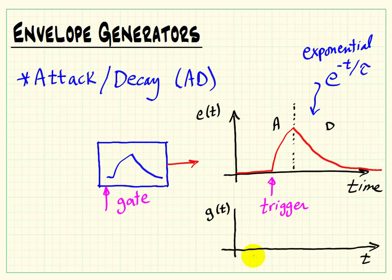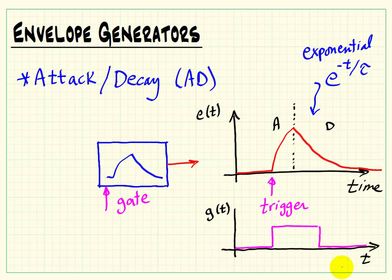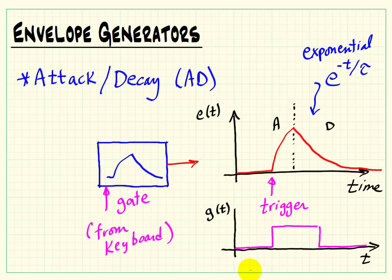What causes the envelope to get its start is the gate signal coming in. The gate is normally low, and then when some action causes a need for an envelope to be generated — such as a key press, for example — that gate signal goes high. When you release the key, the gate goes low again. The attack-decay generator looks at this gate, and whenever it sees that leading edge transition, that's how it knows it needs to start the waveform. Commonly we would use a keyboard gating system to actually trigger the exponential.